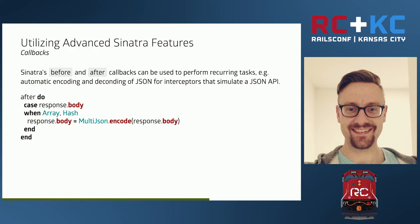There is also the possibility of using Sinatra's before and after callbacks that run before or after a particular endpoint is hit. You could, for instance, utilize an after callback to automatically encode data into JSON. If you're modeling a JSON API, it's tedious to always remember to call to_json on whatever you're sending. So just define it once in a block — in this case I look at the response, and if it's an array or hash, I encode it into JSON.